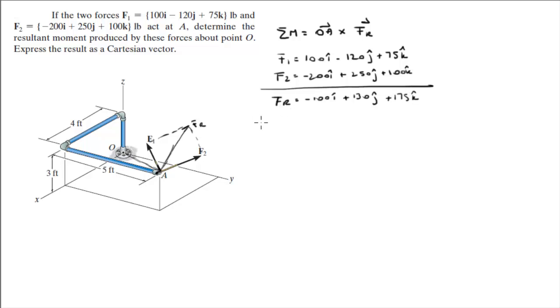Now that you have FR, all you need to do is find the position vector of OA. You know O sits at the origin, 0i plus 0j plus 0k. A sits at 4i plus 5j plus 3k. So, OA is A minus O. O is the origin, so this equals A, which means this is 4i plus 5j plus 3k.